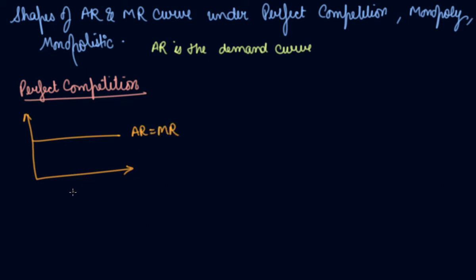Here you have the quantity and you have the price. So this is the shape of AR and MR under perfect competition.